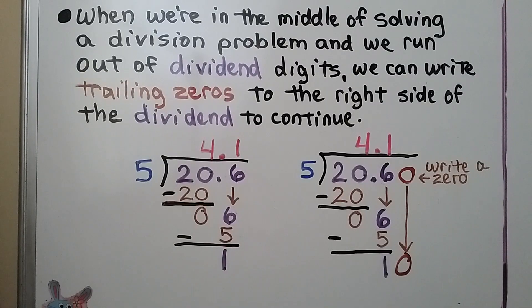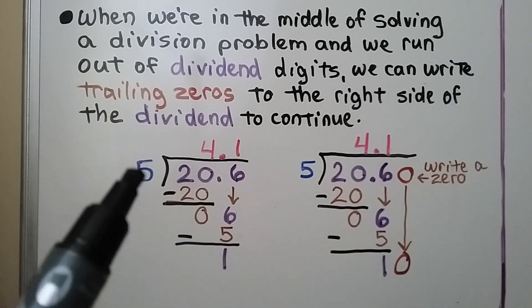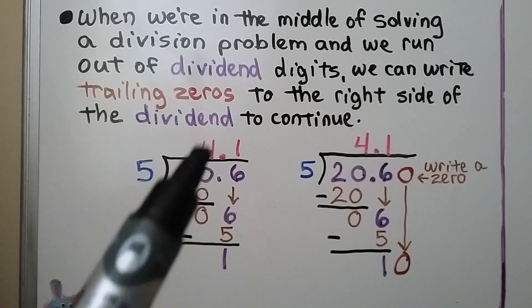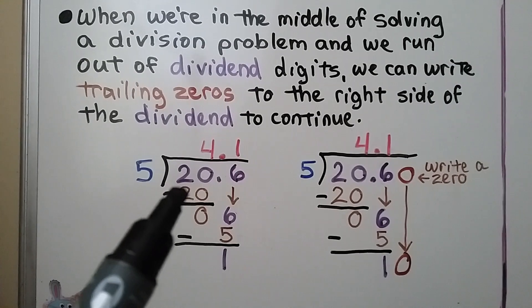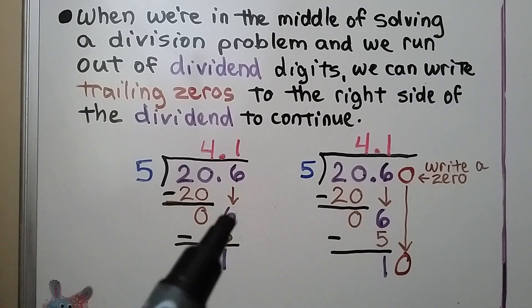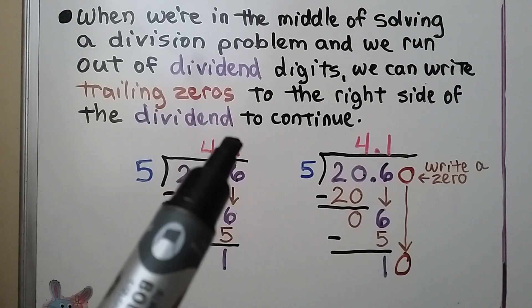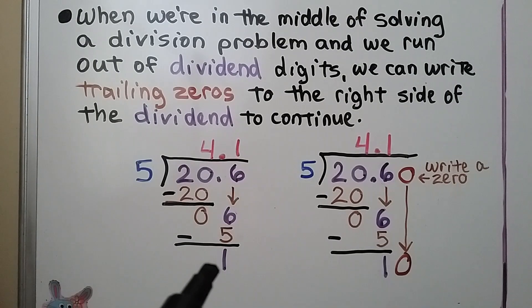When we're in the middle of solving a division problem and we run out of dividend digits, we can write trailing zeros to the right side of the dividend to continue. Here we have 20 and 6 tenths divided by 5. We know 5 fits into 20 four times. We write a four in our quotient, and 5 times 4 is 20. We subtract and get a zero. Now it's the 6's turn to come down. Five fits into 6 one time, and 5 times 1 is 5. We subtract and get a one.